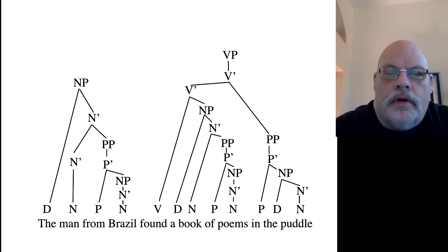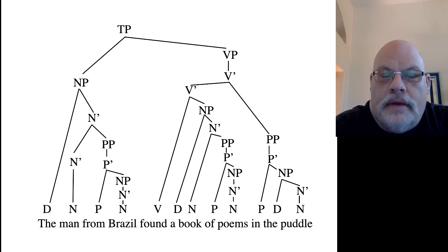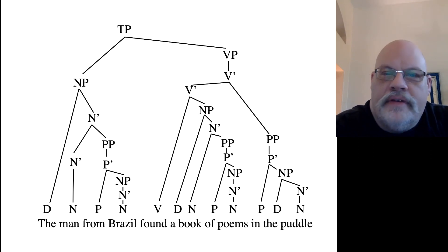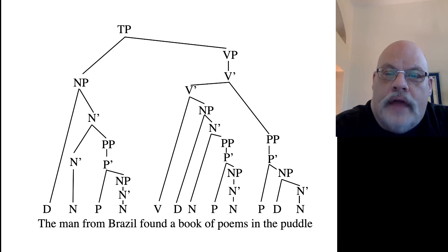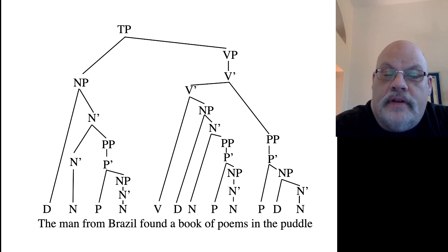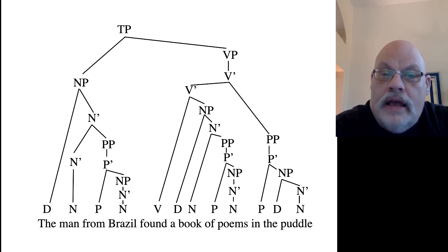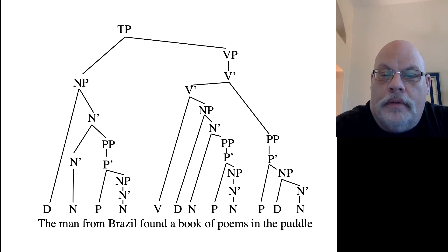So that's constructing a tree using X-bar theory. Pay attention to what is a complement and what is an adjunct. Make sure the number of V-bars or N-bars is one more than the number of adjuncts. Attach complements to heads first, then adjuncts, then specifiers. If drawing the tree from the top down, it's the reverse order: specifier first, then adjuncts, then the complement last.